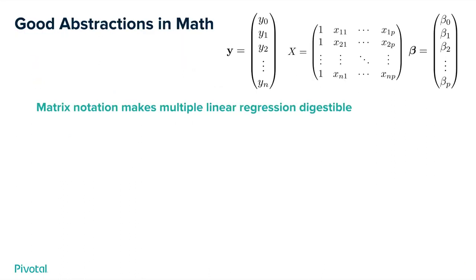Let's go through some other ideas of abstractions that are helpful, because this is the core message I'm trying to talk about. For example, in math, the notion of matrices is an important concept. It makes multiple linear regression more digestible. If you have Y, a column of your dependent variable that you're trying to predict, and a matrix X with many different columns and different values, you're trying to learn a model with coefficients beta for each of those columns.